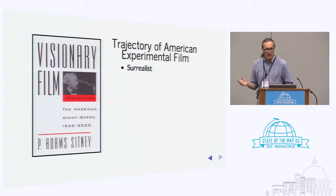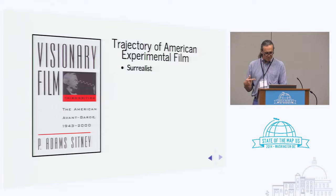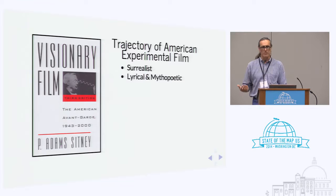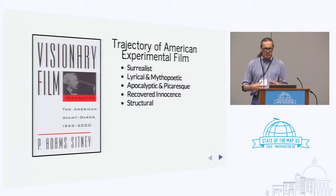Let me give a brief trajectory of American experimental film. The most classic book on it is 'Visionary Film' by P. Adams Sitney. He says film went through various phases: early American experimental film was surrealist like the Europeans, then it moved into a lyrical, mythopoetic phase, and with the Cold War became apocalyptic but also picaresque — adventures and innocence mourning innocence. Then film came into its own as a medium.